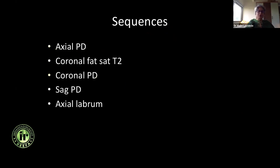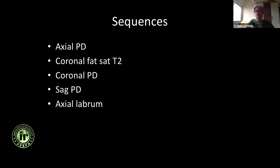We do not do arthrograms. The sequences we obtain can differ slightly based on preference. When looking for internal derangement, we do not do a T1 — but our technologists are trained enough that if they see anything abnormal, they can add one. I'm talking only of internal derangement here, not tumor or infection or other marrow pathologies, because for those, T1 would be an integral part of the scan.